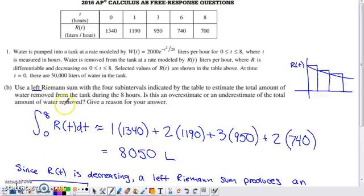Part B says use a left Riemann sum, four subintervals indicated by the data in the table to estimate the total amount of water removed from the tank during the eight hours. Is this an overestimate or underestimate for the total amount of water removed? Give reason for your answer.